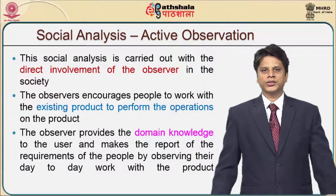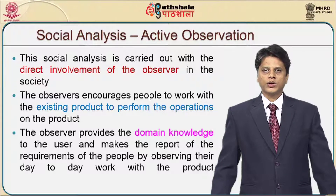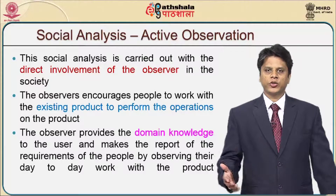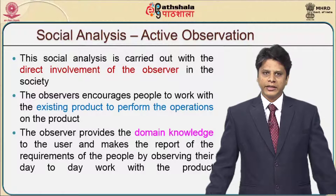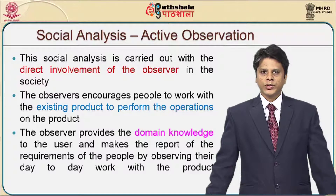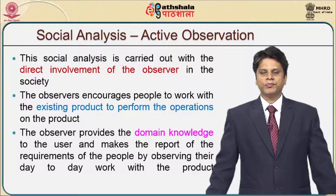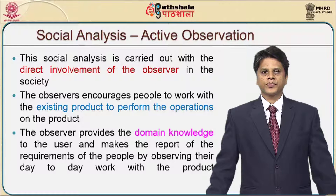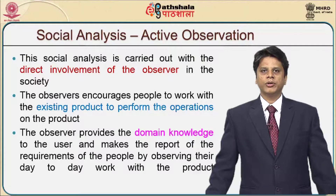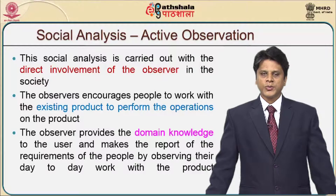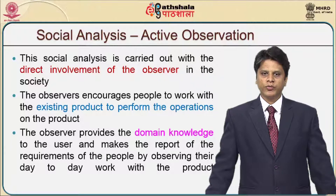The second type is active observation, where social analysis is carried out with the direct involvement of the observer — in contradistinction to the previous type. Here there is a direct involvement of the observer in the society. The observer encourages people to work with the existing product and perform operations on it, trying to identify major hiccups the product might give. The observer provides domain knowledge to the user and makes a report of the requirements by observing their day-to-day work with the product.